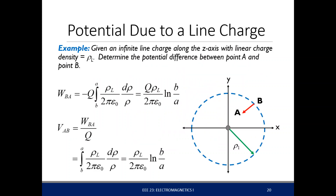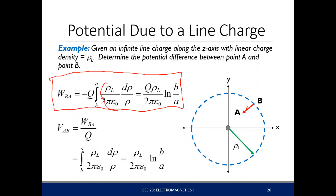For example, given a line charge density oriented on the z-axis with linear charge density rho L, determine the potential difference between point A and point B where we move the point radially inwards. Recall that the work equals this expression — this is the electric field due to the line charge and this is your differential path. After integration, we divide by Q to get the potential difference between your point A and point B.